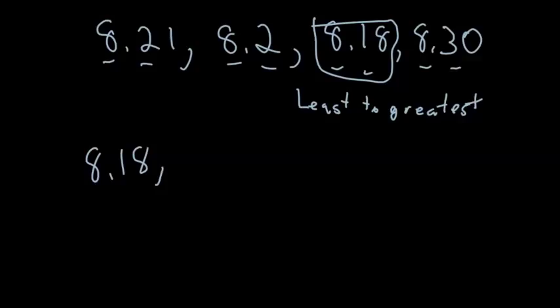Next we look at the next place value. Well we had two twos there, so we look at the two twos and look at the next place value. So this one has a one, this one has nothing, so you can think of a zero there. One is greater than zero, so eight and two tenths is the next one.